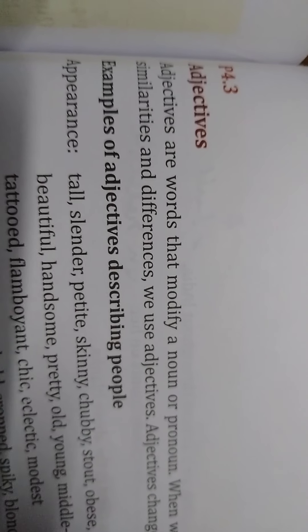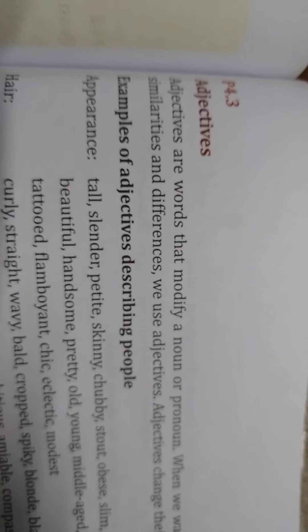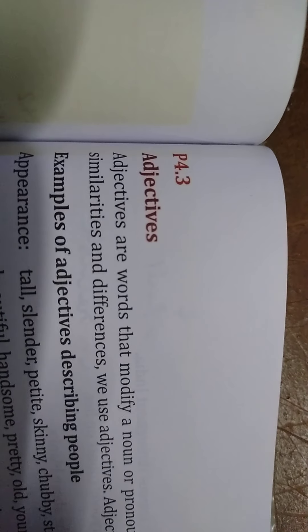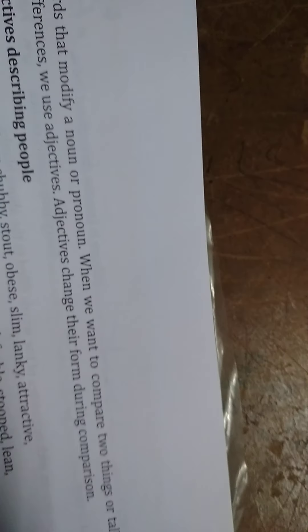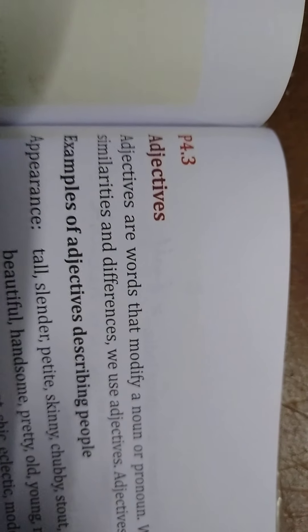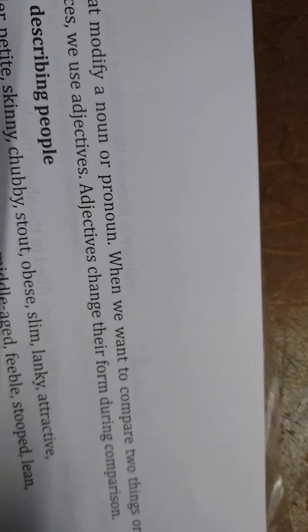For example, if you are talking about Sai, we can say 'Sai is a tall boy' or 'Sai is a smart guy.' So tall and smart are adjectives. When we want to compare two things or talk about similarities and differences, we use adjectives. Adjectives change their form during comparison.